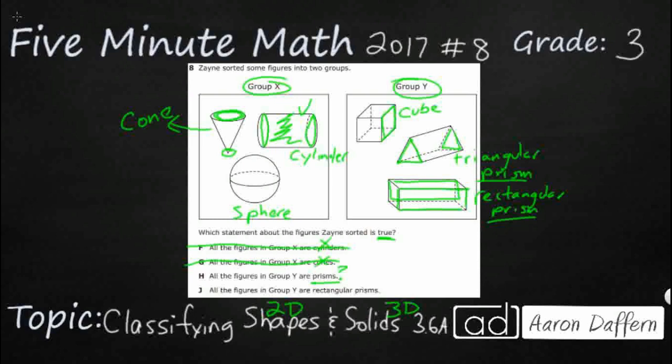All the figures in Group Y are rectangular prisms. Well, we could definitely say that is incorrect, simply because we've got this triangular prism right here. A rectangular prism is a prism that has all faces, either squares or rectangles. So you can have some squares because I think this face right here is a square and this face is a square, but at least some of the faces are rectangles. So that is incorrect, which means our answer is H.